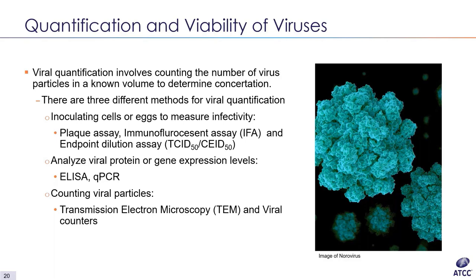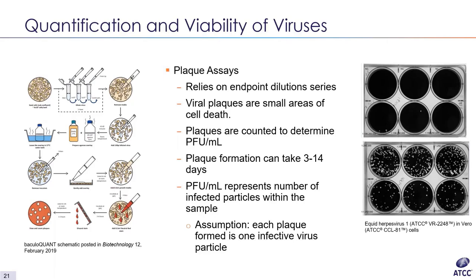For ATCC viral products, measuring infectivity through inoculation of cells or eggs is what we typically use. Plaque assays are the gold standard and have been used for many years. They require an endpoint serial dilution to determine viral titers and are also a common tool for viral purification. Plaque assays are restricted to viruses that induce cell lysis or death, such as coronaviruses, influenza viruses, and herpes simplex 1 and 2. An endpoint serial dilution is inoculated onto a nearly confluent monolayer of cells, after which a temperate agarose overlay containing AGM is added to each sample.